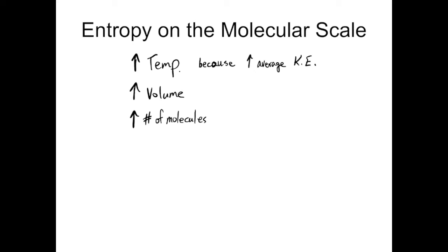Increasing the volume increases the number of microstates, because an increased volume means more possible physical locations for each of the molecules. And increasing the number of molecules increases the number of microstates, simply because there are more molecules in the mix. And that means there are more molecules that can be moving and interacting and rotating and vibrating and things like that.